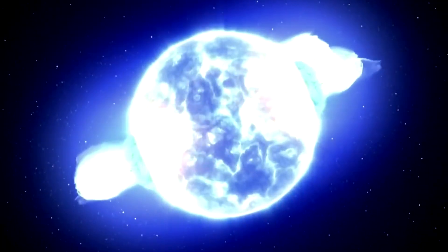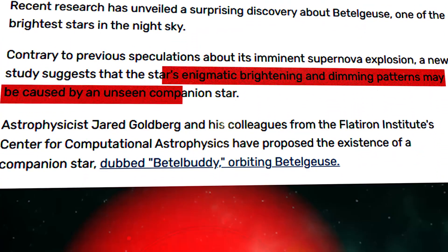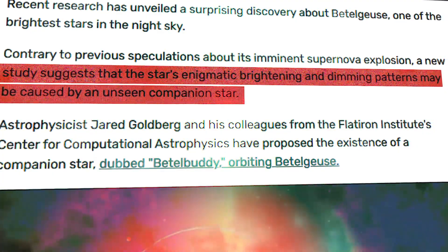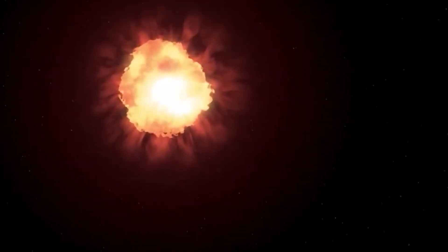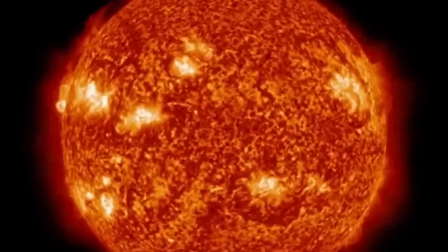But here's where things get interesting. Recent observations suggest that Betelgeuse's behavior might be linked to the presence of a companion star, which it may have already consumed. This relationship could be influencing its rapid rotation and the peculiar patterns we see on its surface.